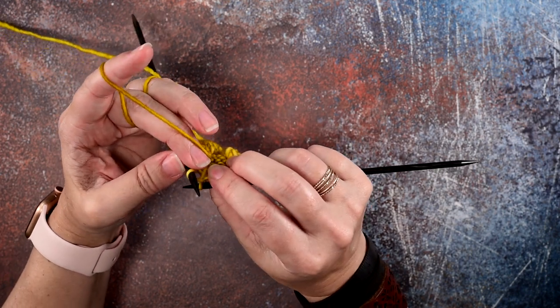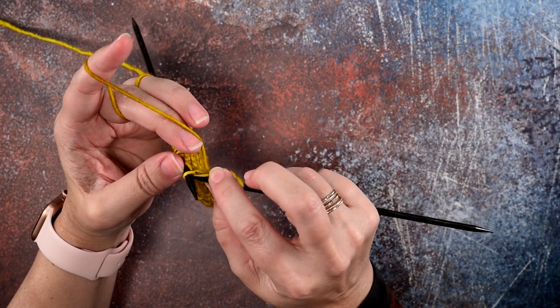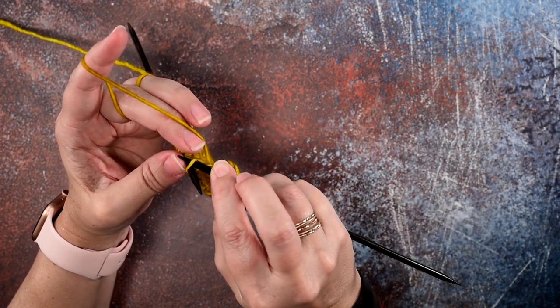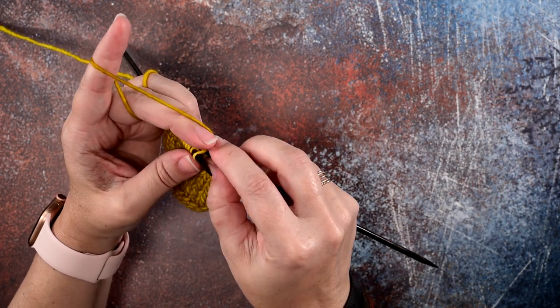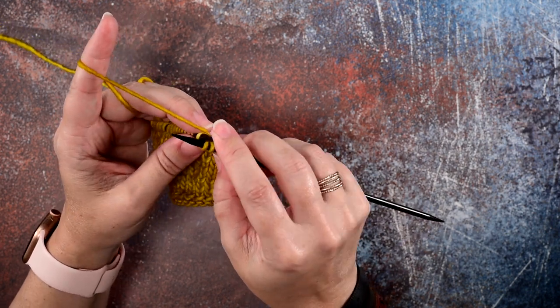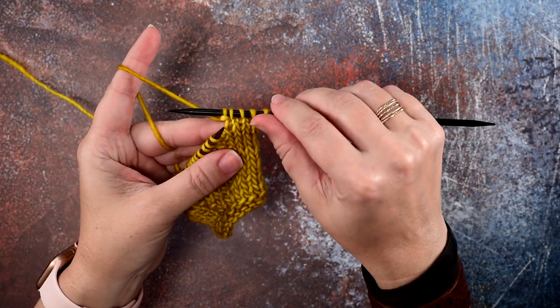I'll rotate my work here so you can see better. You're going to insert your right hand needle tip purlwise through the back loop of that same stitch, and you're just going to knit it as usual. Then we can remove that original stitch from our left hand needle. If you take a look here...